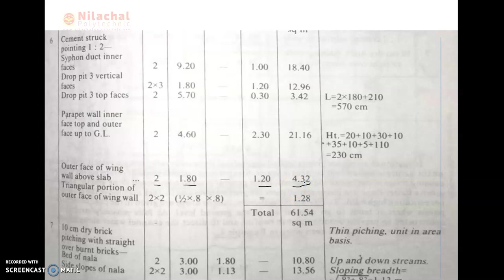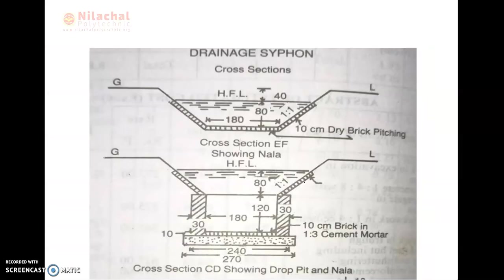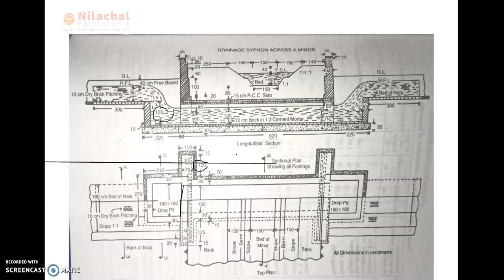Then we go through the triangular portion of the outer piece of the wing valve. The outer face of the wing valve — the triangular portion needs to be deducted here, 2 into 2 numbers. Here the outer portion of the wing valve has nada provided on both sides. The wing valve portion — the drainage section is deducted.